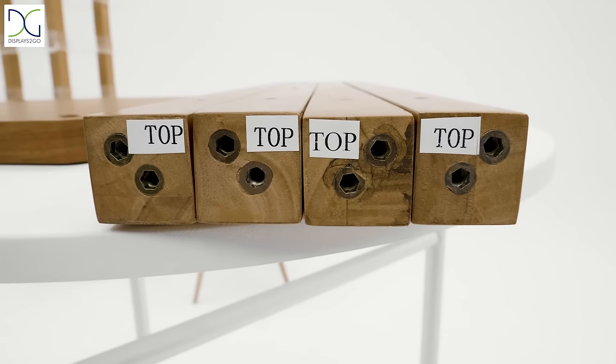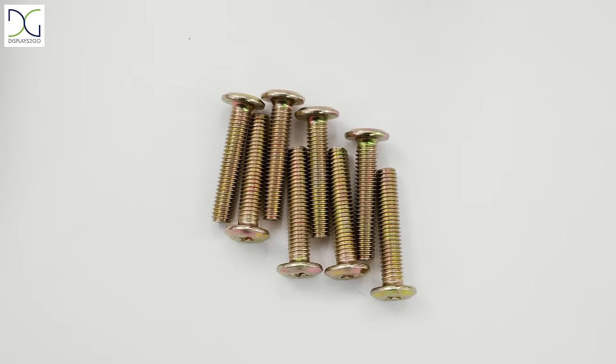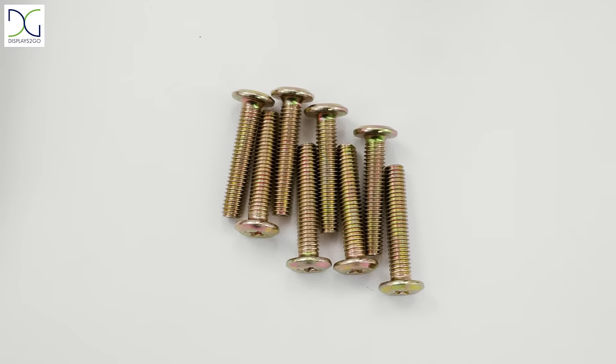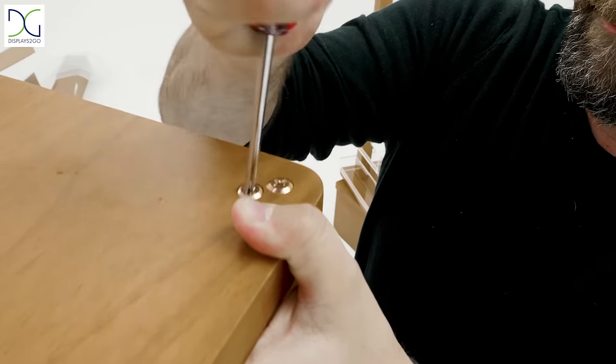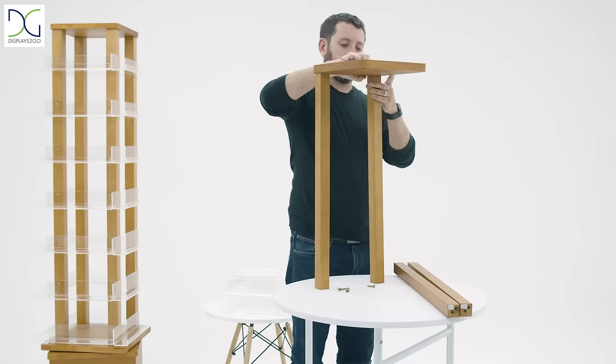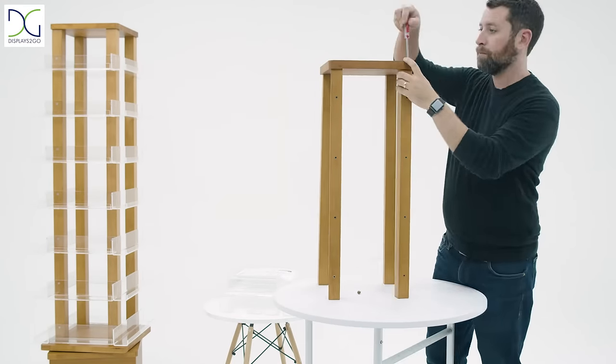One end of the pole labeled with top must face up. Insert two M6 screws through the holes on the panel and tighten them to connect the pole. Repeat the step to connect the remaining poles with the top panel.